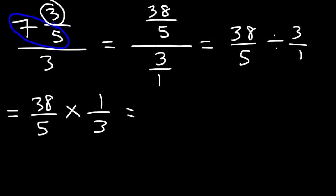So now we can multiply across. 38 times 1 is just 38. And on the bottom we have 5 times 3, which is 15.